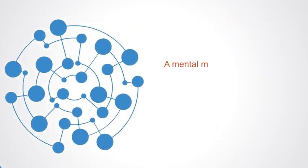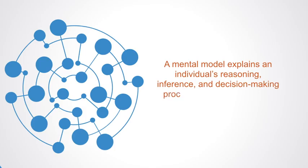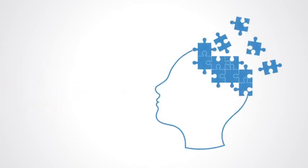A mental model explains an individual's reasoning, inferring, and decision-making process that influences their perception. Mental models reflect the beliefs, values, and assumptions that we hold, and they underlie our reasons for doing things the way we do.